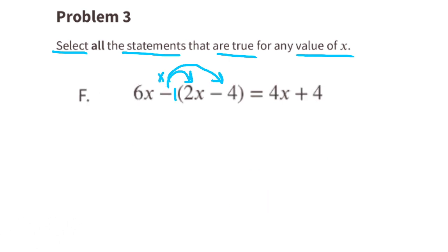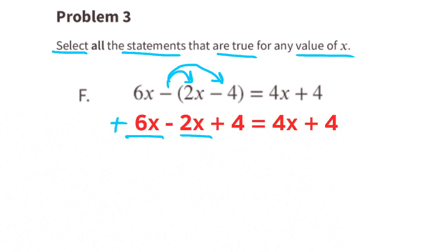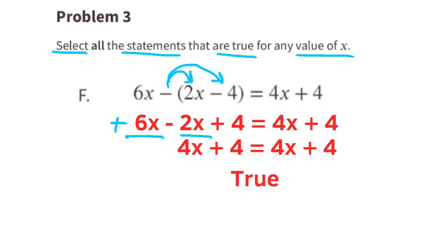Option F: a negative times a positive is a negative, and a negative times a negative is a positive. So on the left side of the equal sign, we can rewrite this as 6x minus 2x, which is 4x. The left side reads 4x plus 4, and the right side reads 4x plus 4. Since they're the same, this statement is true.